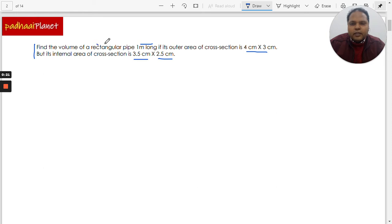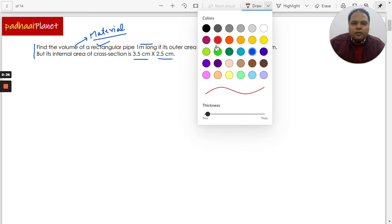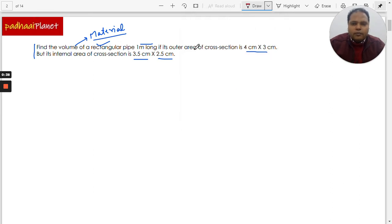What we need to do is find the volume of the rectangular pipe. In fact, what we need to find is the volume of the material of the rectangular pipe. It's a very easy question and one of the most frequent questions which comes quite often in examinations.